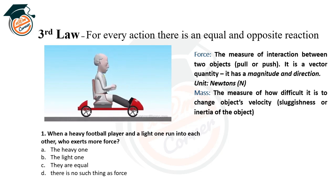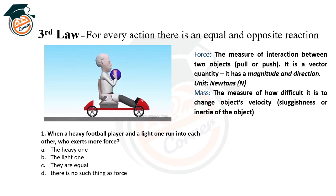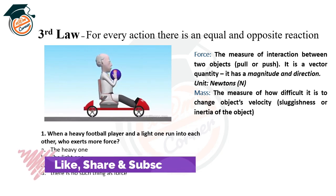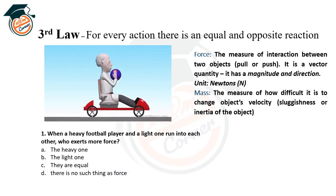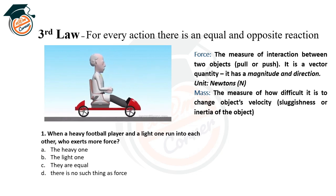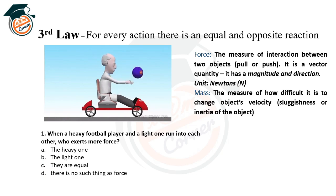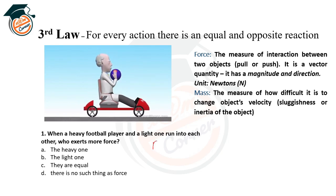Key terms related to the third law: Force is defined as the measure of interaction between two objects — a pull or a push. It is a vector quantity with both magnitude and direction, measured in Newtons. Mass is the measure of how difficult it is to change an object's velocity — it represents the inertia of the object.